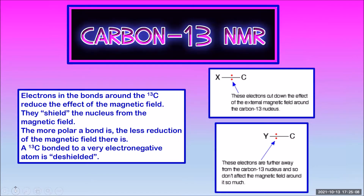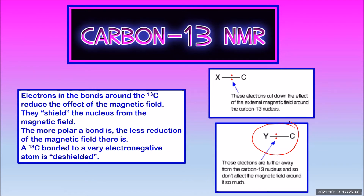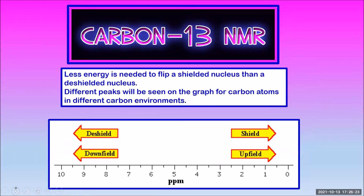In carbon-13 NMR, the nucleus being flipped is carbon-13 — only about 1% of all carbon atoms, but a sample contains maybe millions or billions of carbon atoms. The electrons in the bonds around the carbon atom can actually reduce the effect of the magnetic field we are applying. This means the nucleus can be flipped with less energy. We say the carbon-13 nucleus is being shielded from the magnetic field. If the carbon is bonded to a very electronegative atom, the electrons are dragged away from the carbon-13 nucleus, so it feels much more of the magnetic field and takes more energy to flip. We say the carbon-13 nucleus has been de-shielded. The recordings on the NMR spectrum will appear at different places depending on how much shielding there is.